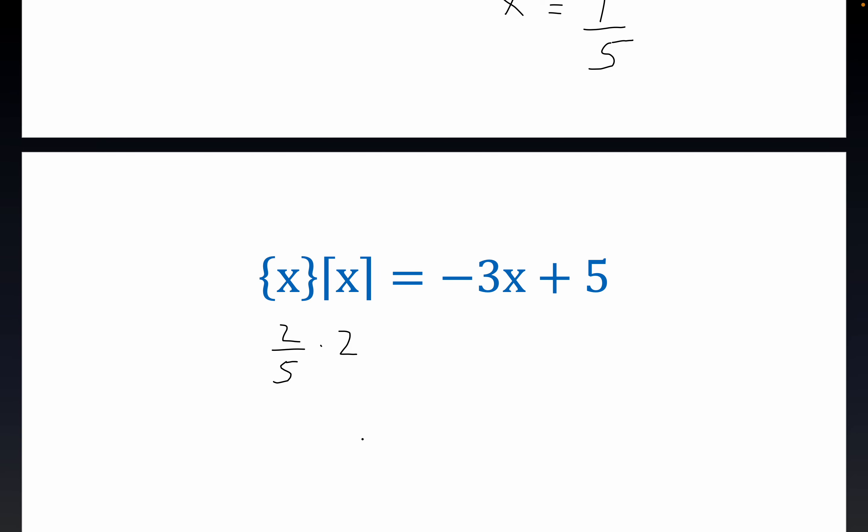So notice that this is equal to 4 fifths. So what we get is 4 fifths. We're checking to see if 4 fifths is equal to minus 3 times 7 fifths. Now minus, let me just write this, minus 3 times 7 over 5. Plus 5.